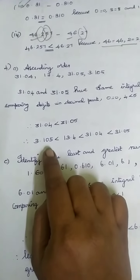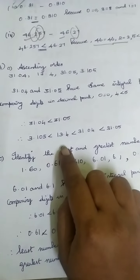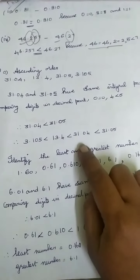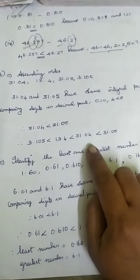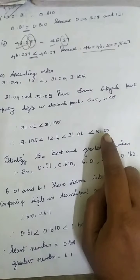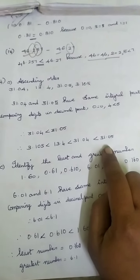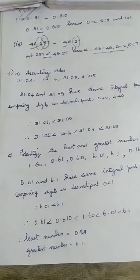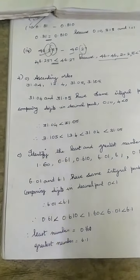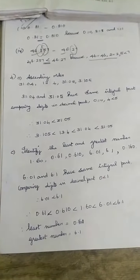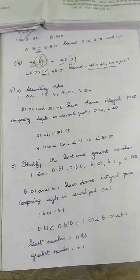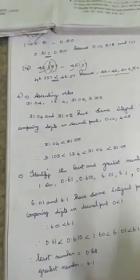So the ascending order is: 3.105, 13.4, 31.04, 31.05. We have written the numbers from the smallest to the greatest.